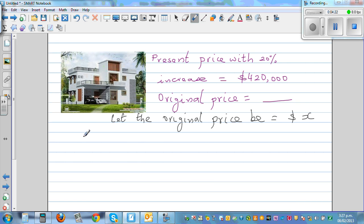This is X plus 20% of X equals $420,000. That is, X plus 20% as a decimal, 0.2 times X, equals $420,000.